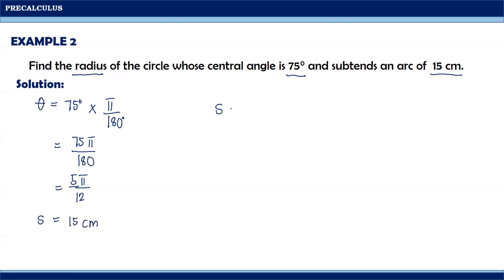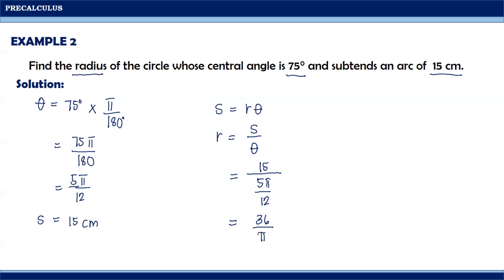It was also given that the arc length s is equal to 15 cm. Looking at the formula s equals r theta, to solve for r, it will be equal to s divided by theta. Substituting our values, r equals 15 divided by 5 pi over 12. Simplifying this expression, we will have 36 divided by pi. Substituting 3.14, we get 36 divided by 3.14, which equals 11.46 centimeters. Therefore, the radius of the circle is equal to 11.46 centimeters.